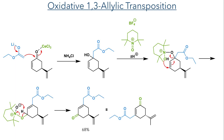The resulting allylic alcohol then took part in an oxidative 1,3-allylic transposition. The reaction of the compound with TEMPO-tetrafluoroborate first produces the TEMPO adduct of the hydroxyl group. The alkene then undergoes a migration upon attack of the oxygen atom present on the TEMPO molecule. This alkene migration breaks a carbon-oxygen bond, and the resulting TEMPO intermediate can deprotonate the molecule, oxidising it to a ketone in a 68% yield.